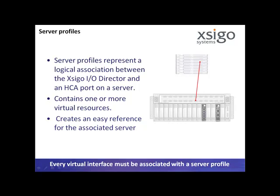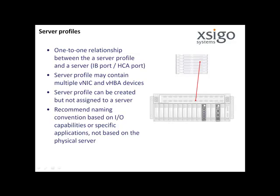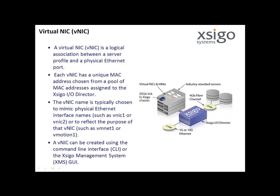Before virtual interfaces can be configured for the host servers, a SEGO IO Director must be configured with an object called a server profile. A server profile represents a logical association between the SEGO IO Director and an HCA port on a server. The server profile can contain one or more virtual resources, and server profiles are named to create an easy reference for an associated server. Every virtual interface must be associated with a server profile. A virtual NIC represents a logical association between a server profile and a physical Ethernet port.